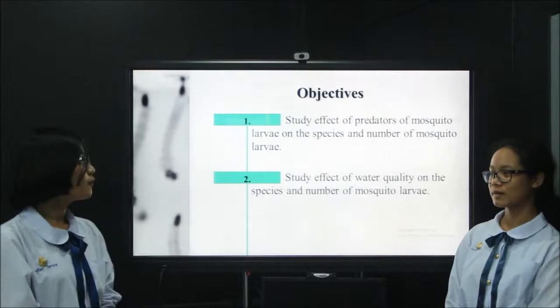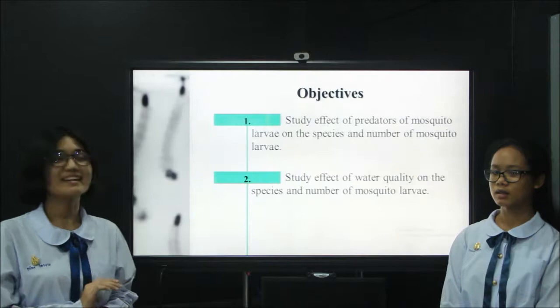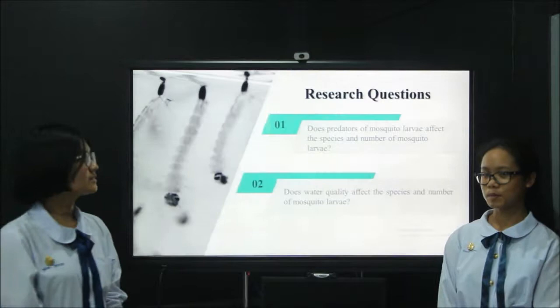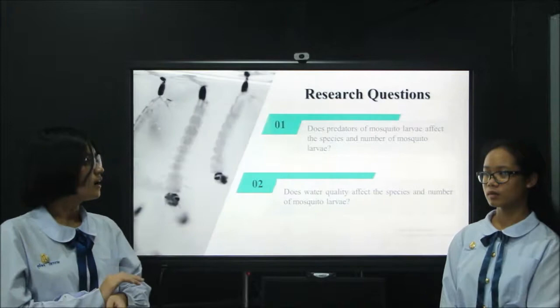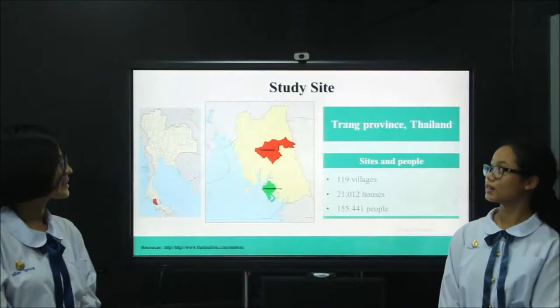Here are our objectives. First, to study the effects of predators of mosquito larvae on the species and number of mosquito larvae. Second, to study the effects of water qualities on the species and number of mosquito larvae. Our research questions are: does the presence of predators affect the species and number of mosquito larvae, and does water quality affect the species and number of mosquito larvae?